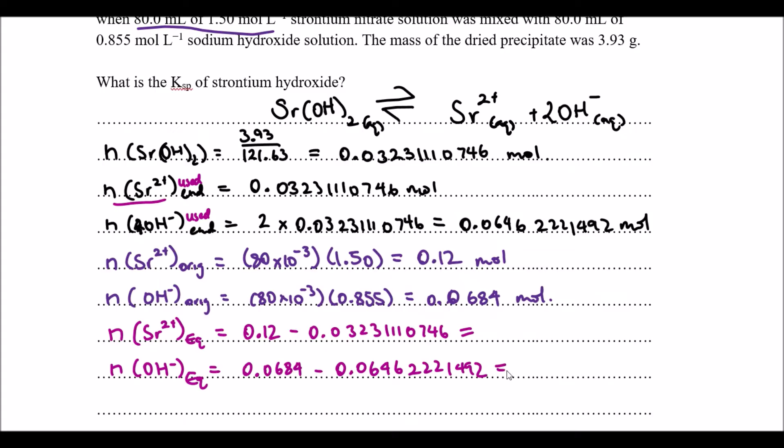At equilibrium would be 0.0684 subtracted by the value we found above. Let's look at what the values are. For the number of moles of strontium at the end, that is 0.08768889254, and then number of moles at the end for our hydroxide ion, that's what we have there.